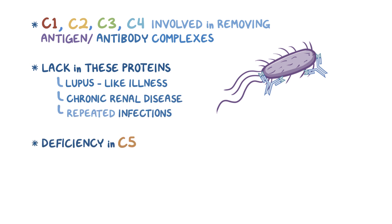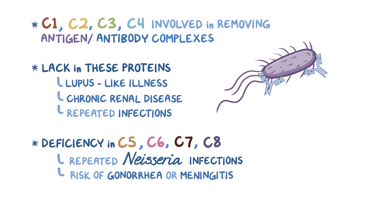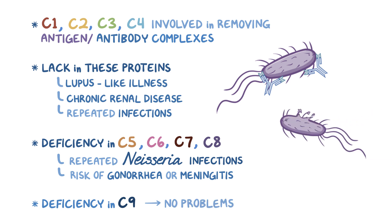Individuals who are deficient in C5, C6, C7, or C8 suffer from repeated Neisseria infections, and are at higher risk of developing gonorrhea or meningitis. Interestingly, individuals who are deficient in C9 seem to have no problems, because C5, C6, C7, and C8 can lyse bacteria all on their own, with C9 being icing on the cake.